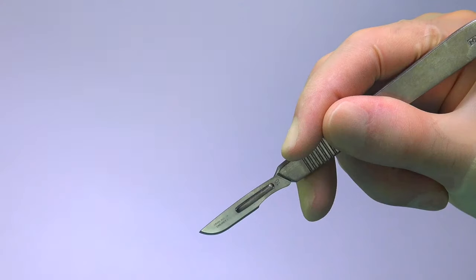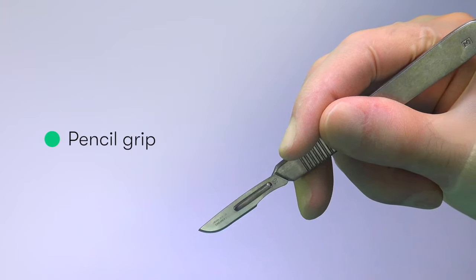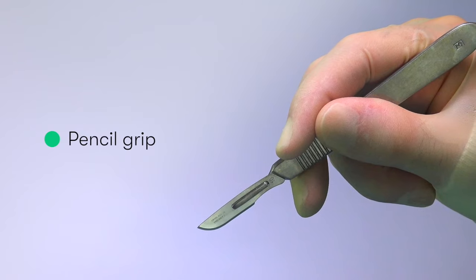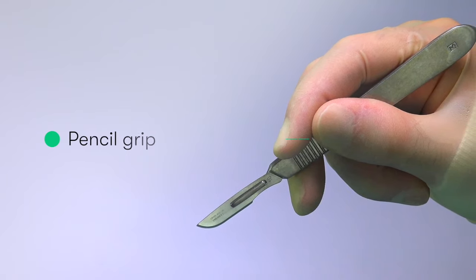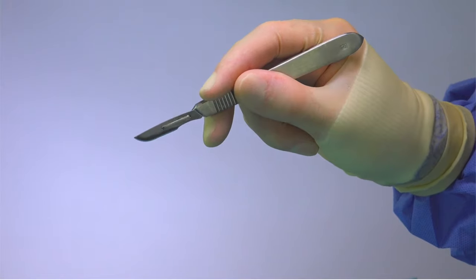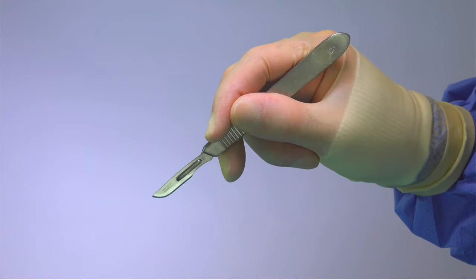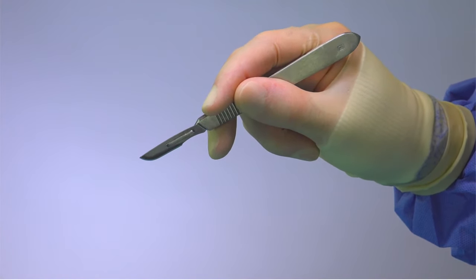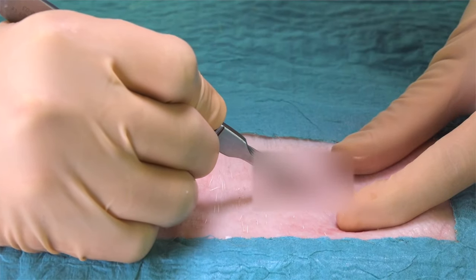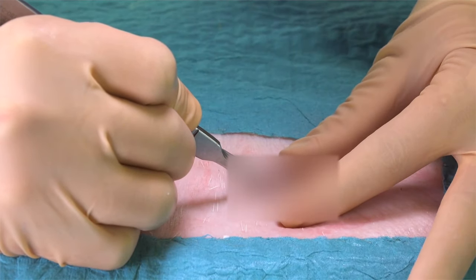The pencil grip is used to hold the scalpel when we're performing more delicate dissections, for example during an incision of a superficial skin lesion. The weight of the hand can be supported by the medial fingers and the wrist, which can rest upon the surface and allow stabilization of the hand during more intricate dissection.